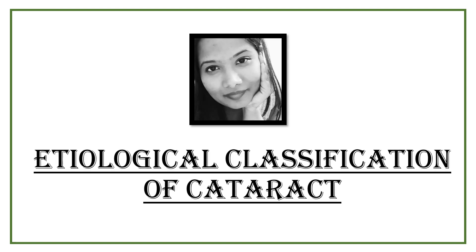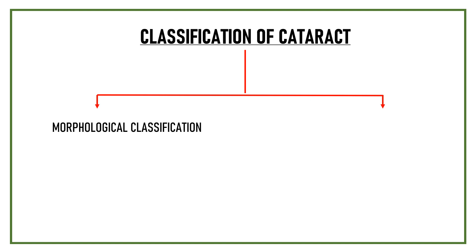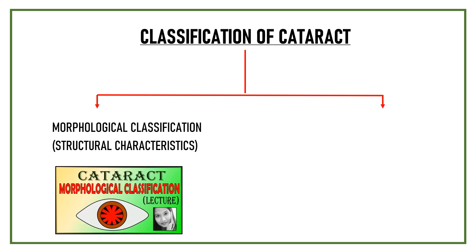Welcome to iCare Central. This video is on the etiological classification of cataract. Cataract can be classified in two ways: the morphological classification, based on structural characteristics, which was discussed in a previous video, and the etiological classification, which we will discuss here. Etiology means the cause of a disease, so etiological classification is based on the different causes that may lead to the development of cataract.